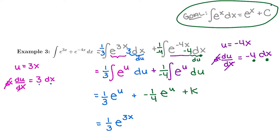And then finally, our final answer. Instead of writing plus and negative, I'm just going to write minus one-fourth e to our u is negative 4x plus c.